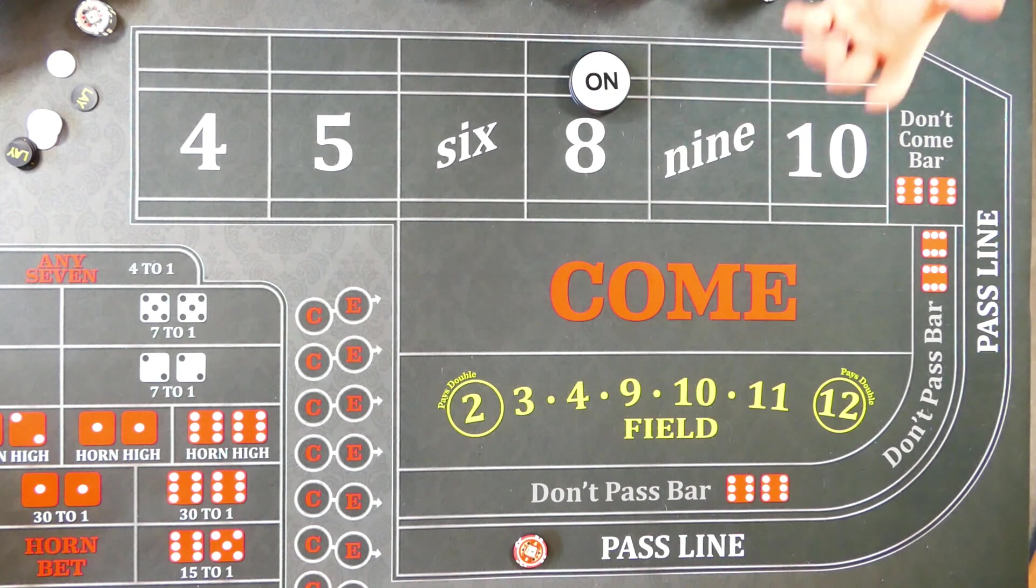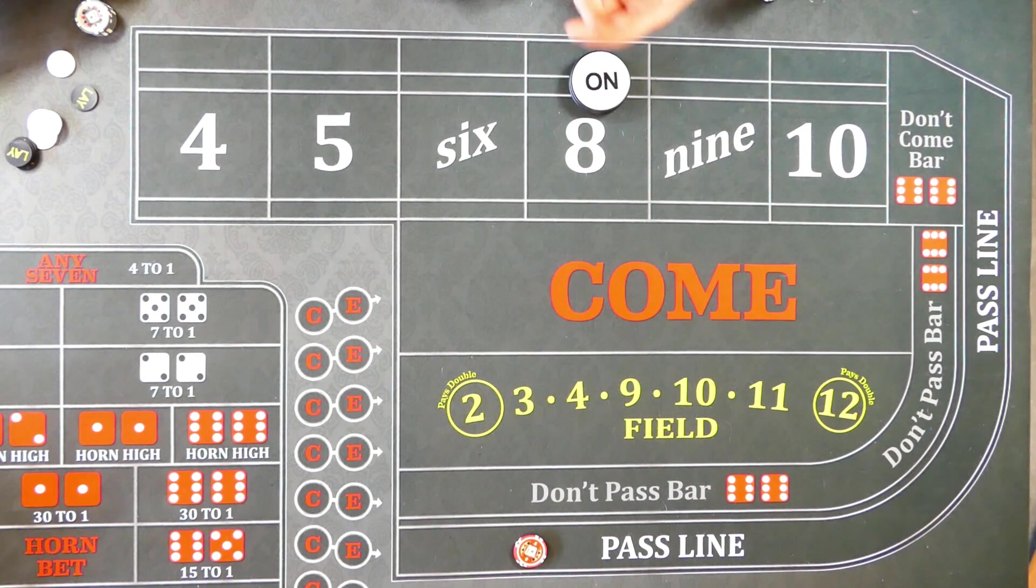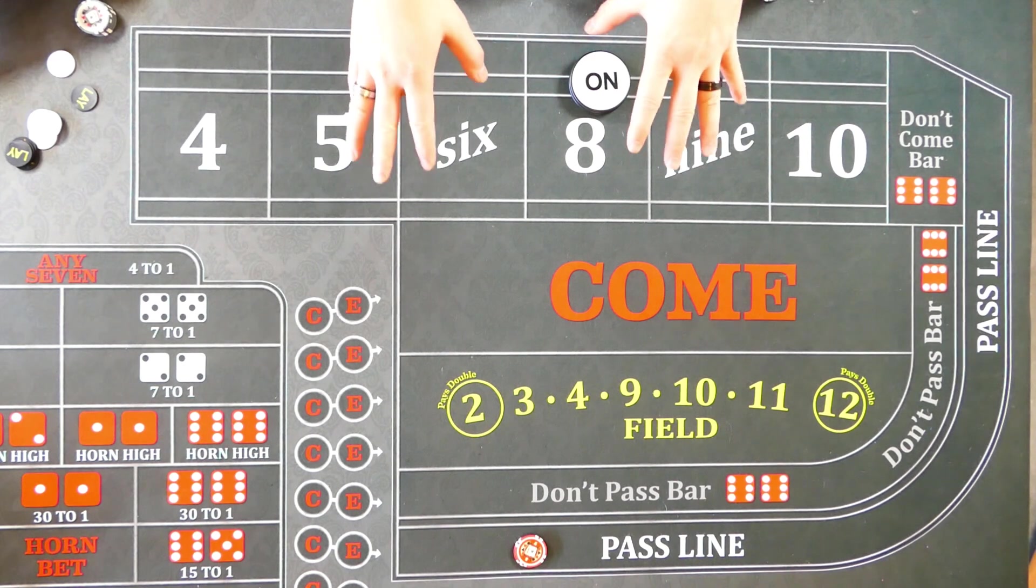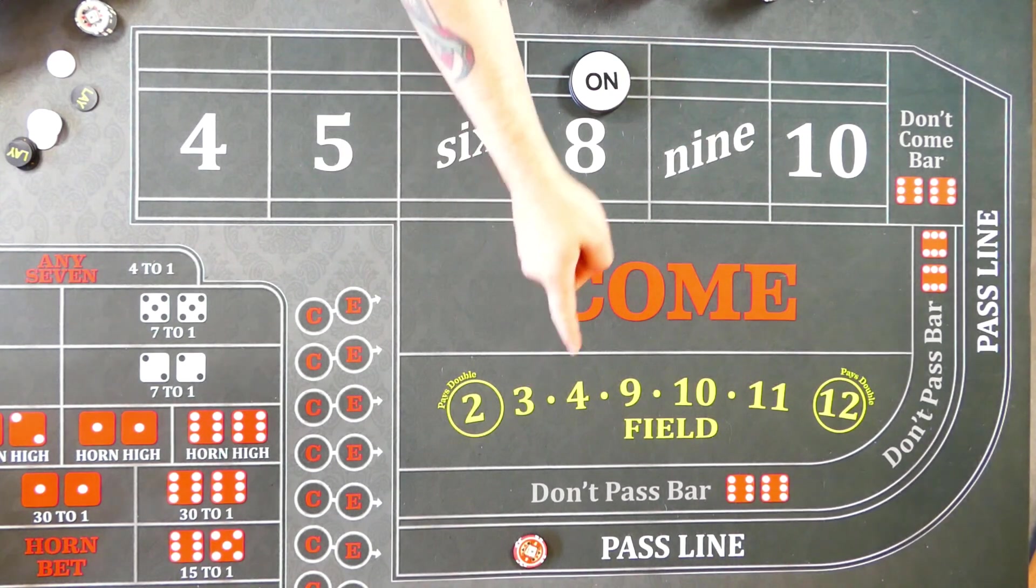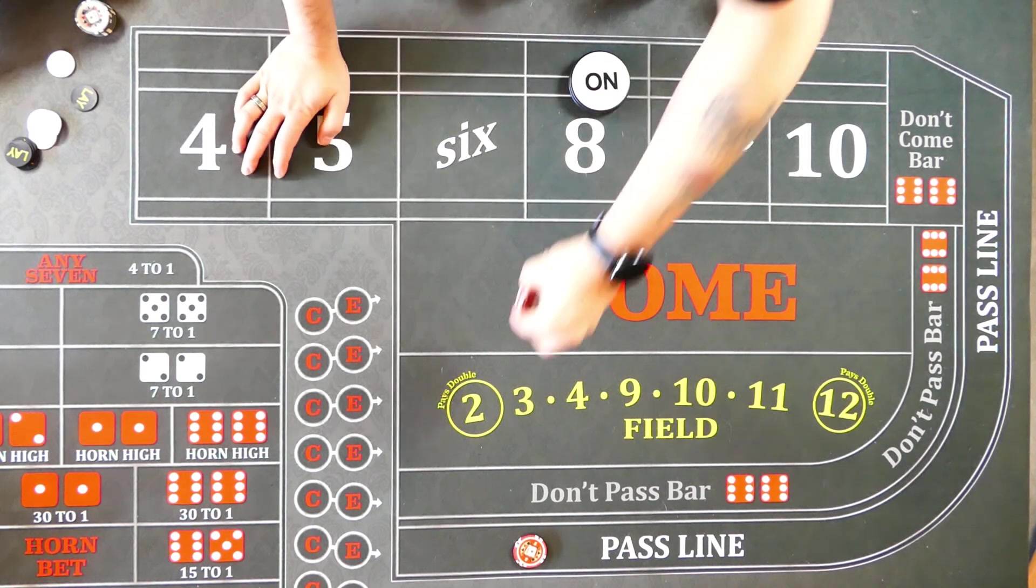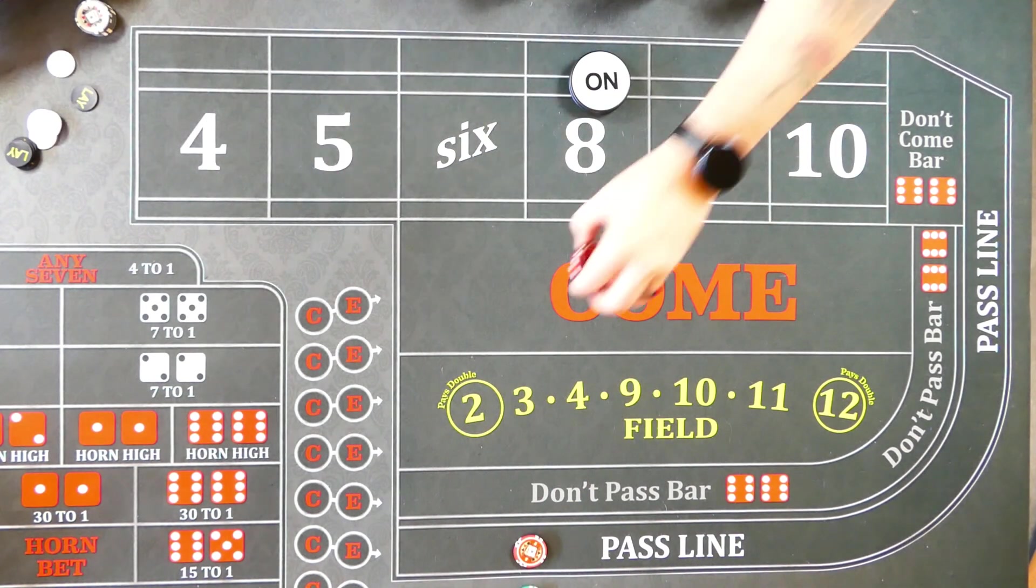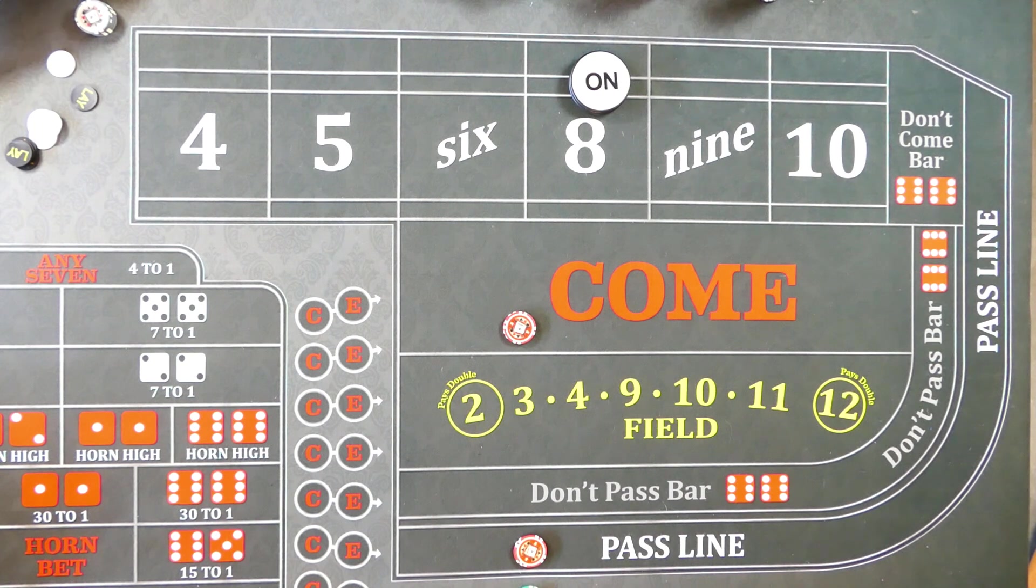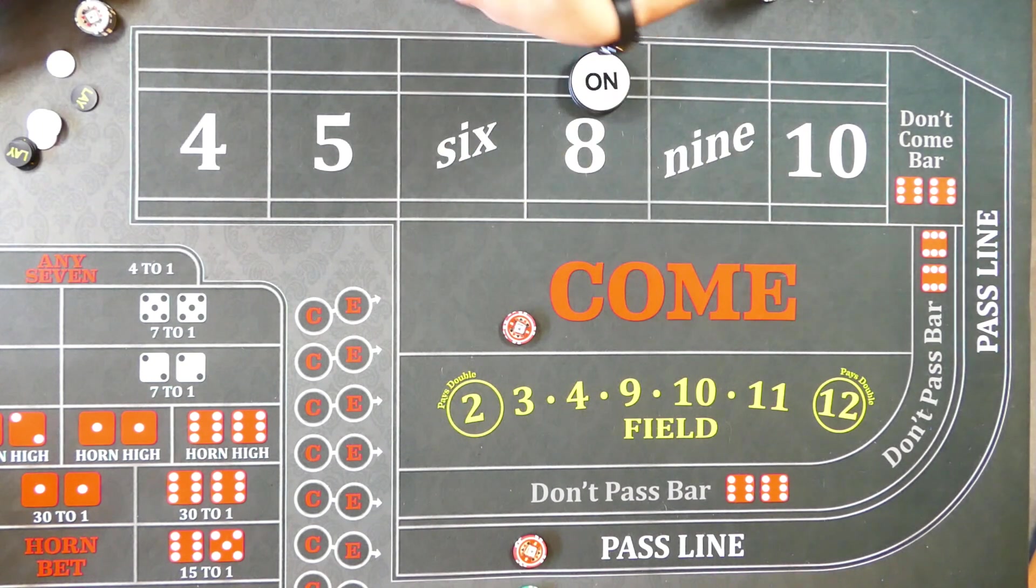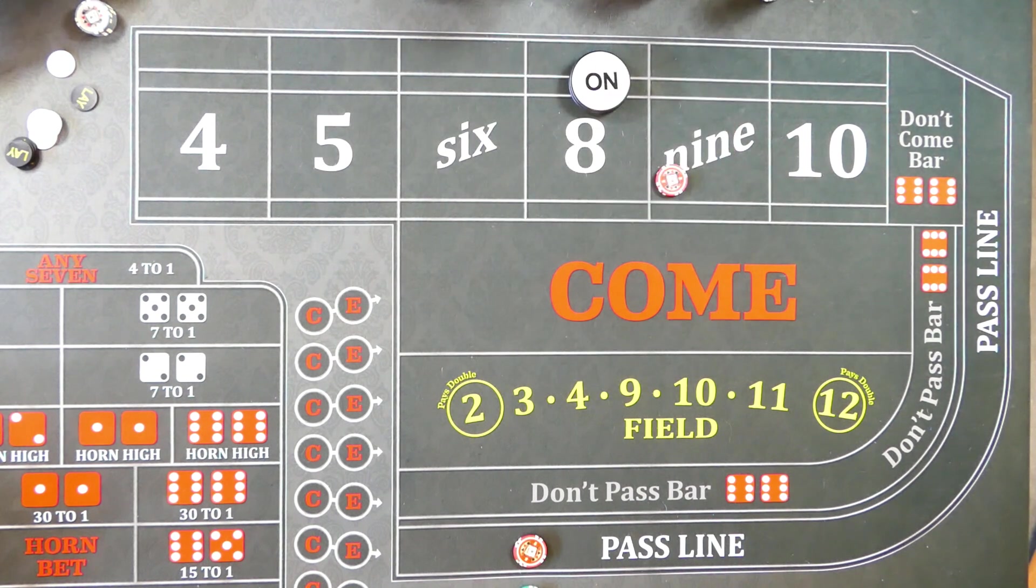Now from here is when they start their Molly system. Some people may include their pass line into it. I'm pretty certain that most people that do a two point Molly system are actually doing a three point Molly. They're just including the pass line as one of their points. So once there is a point, the player will place any odds they wish to place. We'll go ahead and just, we'll place 50 odds. And then they put a come bet out.